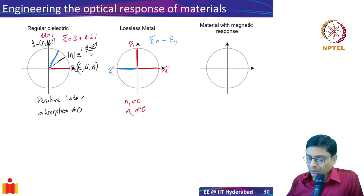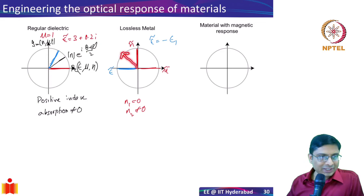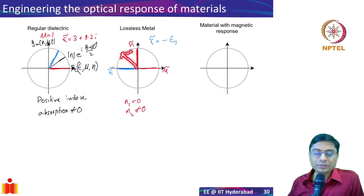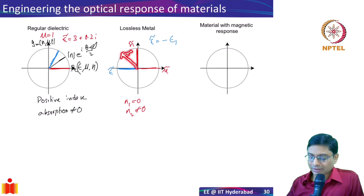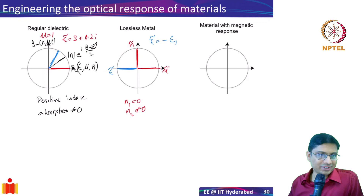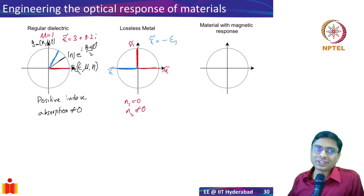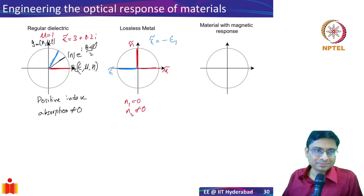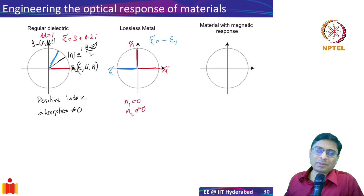If you want to make sure that the refractive index goes in the direction that gives a negative index, you'll have to consider a material with a magnetic response. If you don't have that, you cannot get negative index. For a while in the metamaterial community, this was a big focus — people were trying to come up with geometries that have a magnetic response, which also had all sorts of other interesting applications.